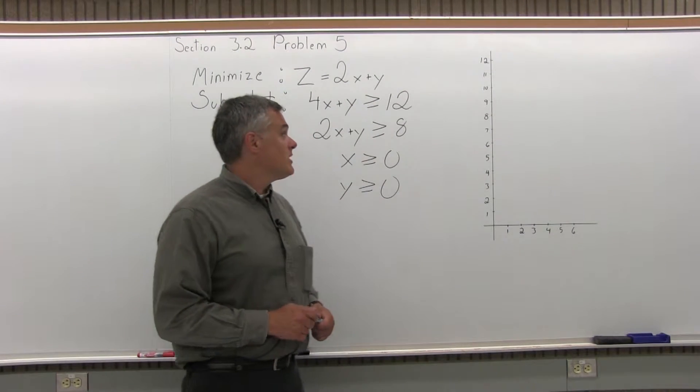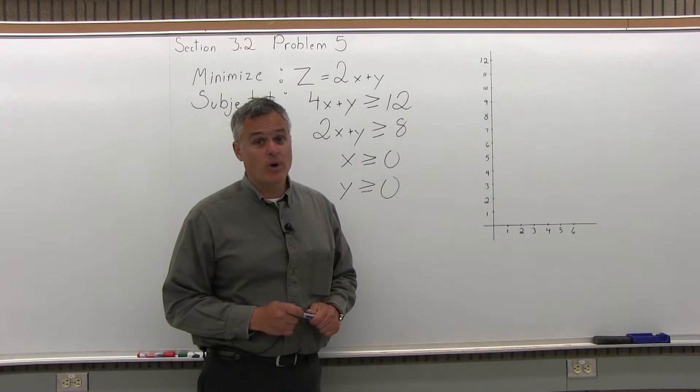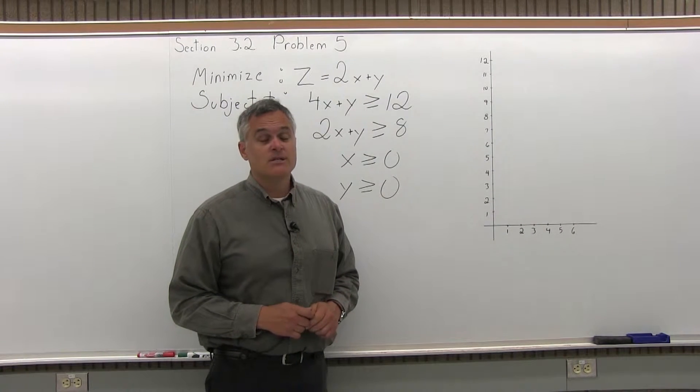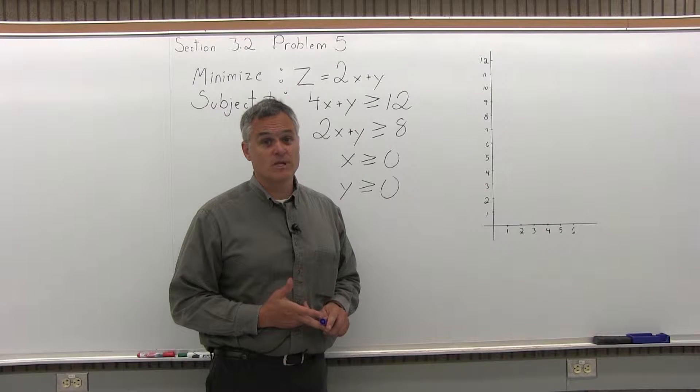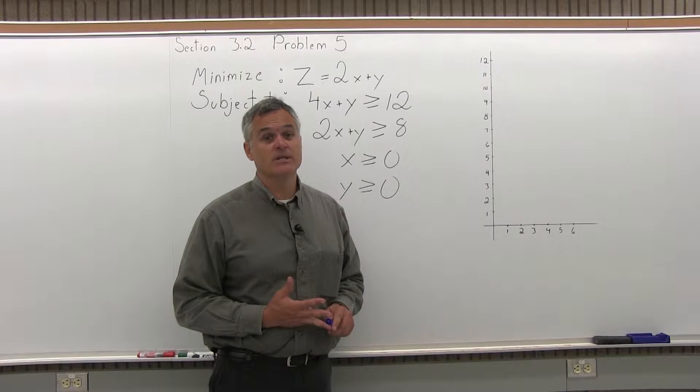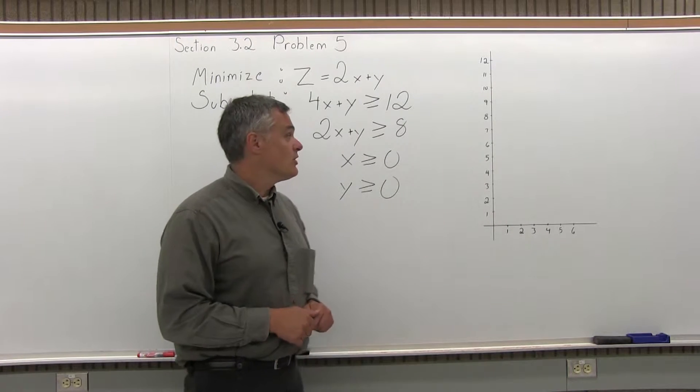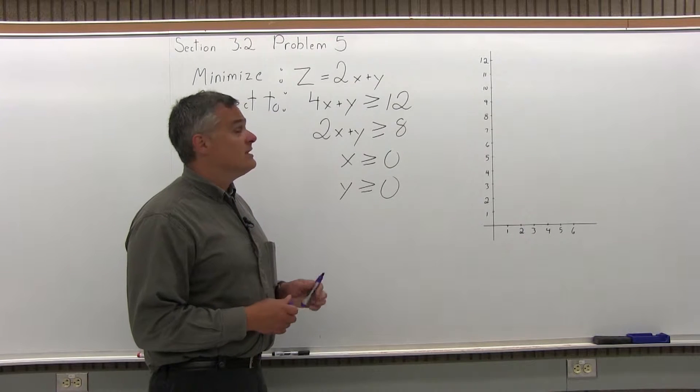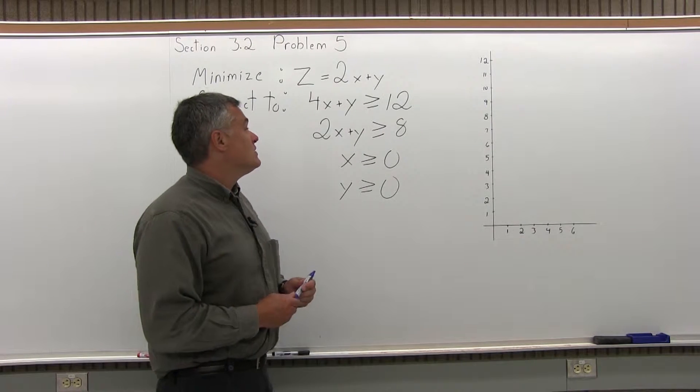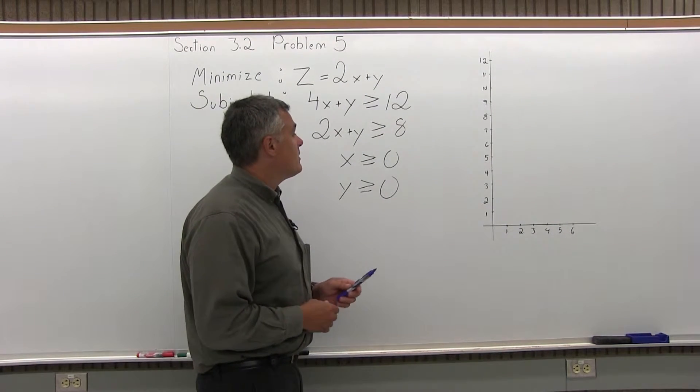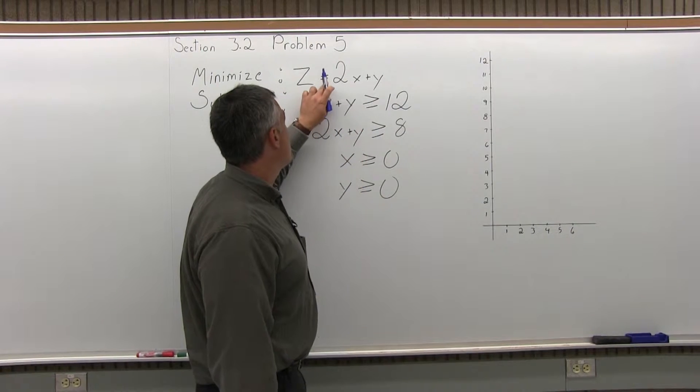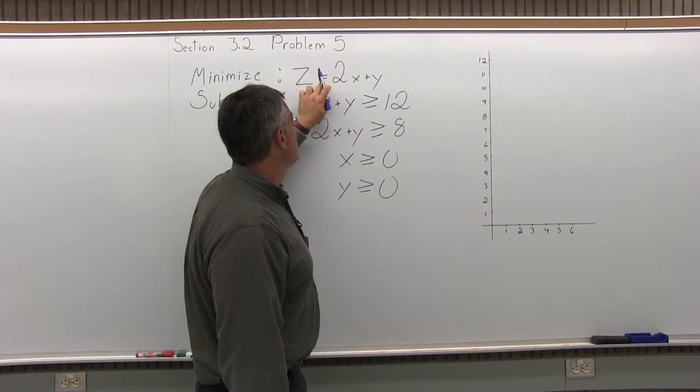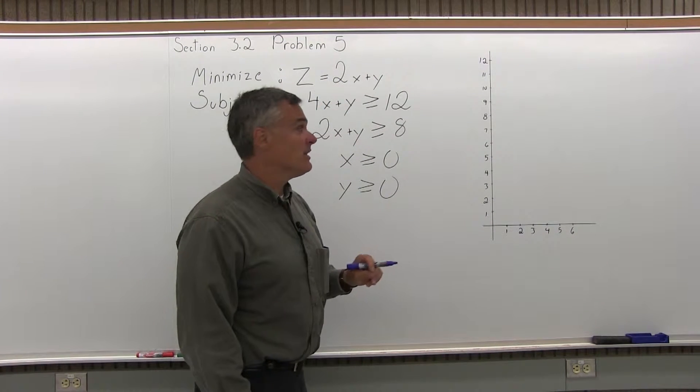So to do a problem like this, there are four steps. Step one is graph your feasible region, step two is label your corner points, step three is fill out the chart, and step four is state your solution. So let's go through those steps. Step one is graph the feasible region. The things that get graphed are the parts of the problem that have inequality symbols. We do not graph the one thing that has an equal sign, that comes in later.